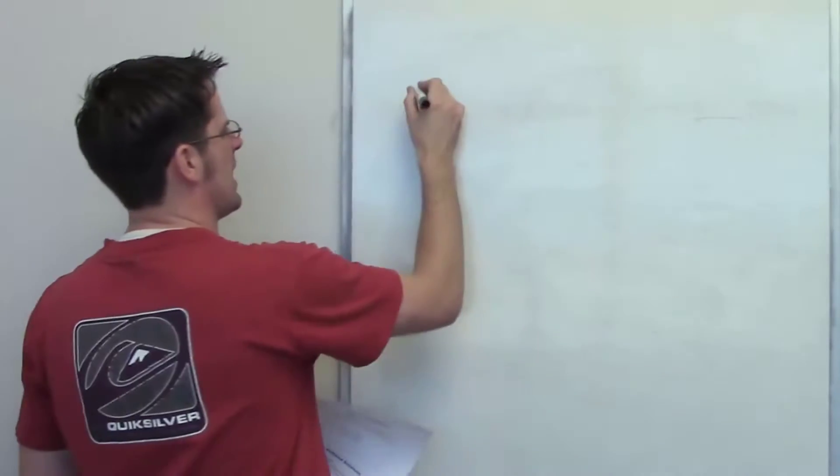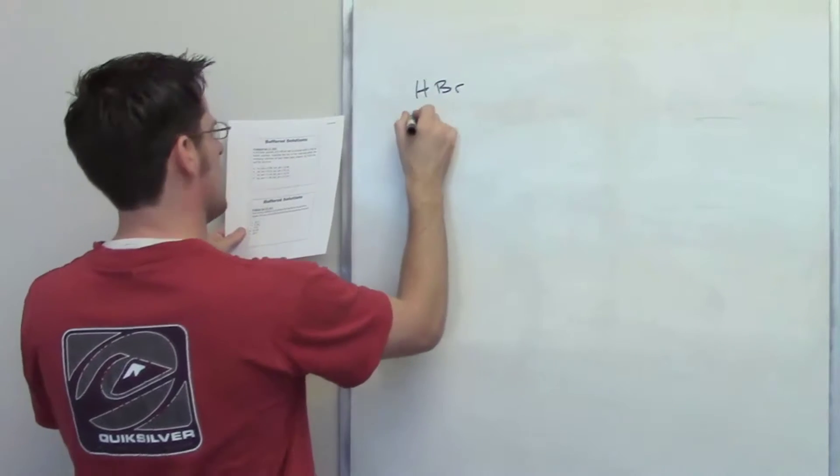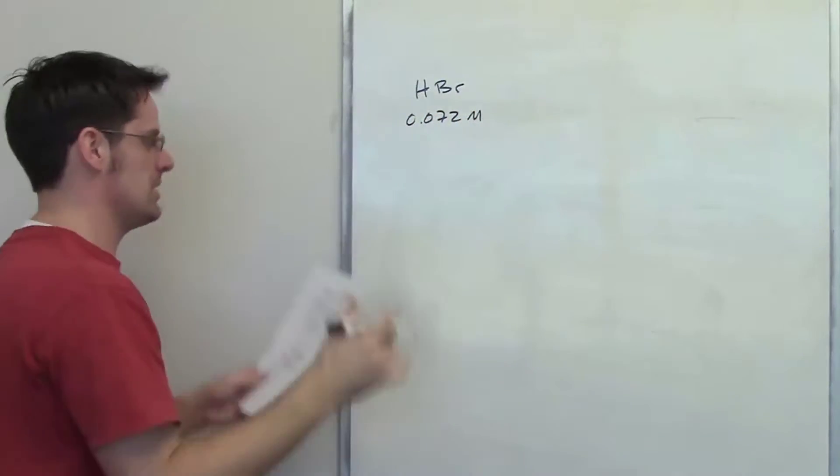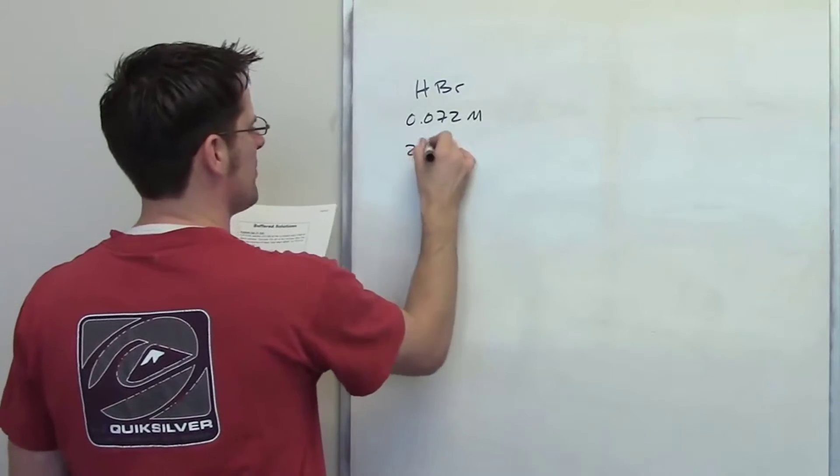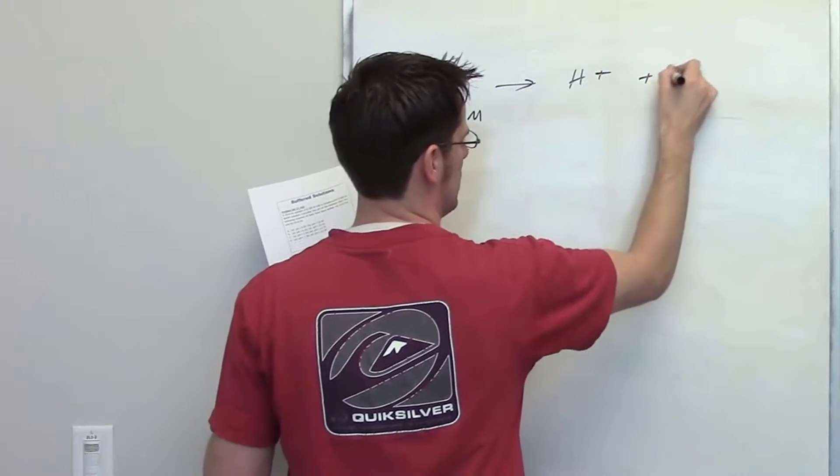Now in this question, it says that I've got HBr, and I've got a solution of HBr that is 0.072 molar, or moles per liter. That's the concentration, and I've got 25 milliliters of it. It's of course going to dissociate completely to form H+ and Br-.